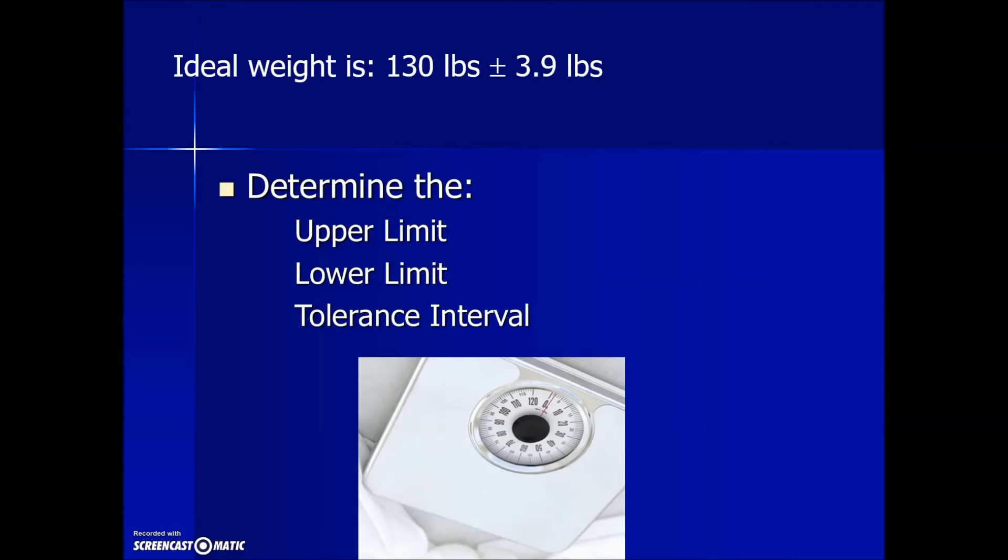We'll add the 3.9 variation to our standard measurement for the upper limit or maximum. We will subtract 3.9 from our standard measurement to get the lower limit or minimum. We can either subtract the upper and lower to find the difference for the tolerance interval, or simply multiply our variation by 2. From the maximum acceptable to the minimum could have a difference of 7.8 pounds.